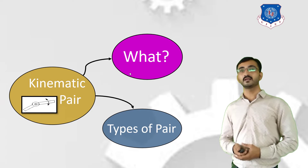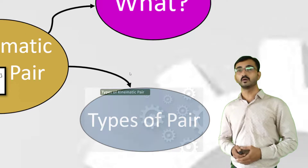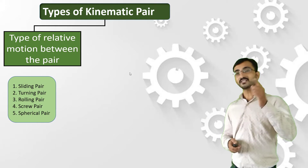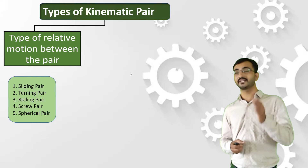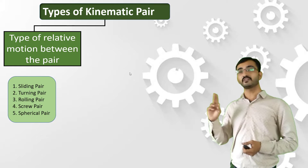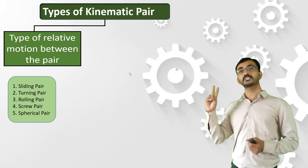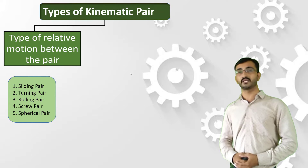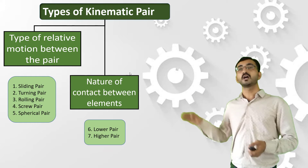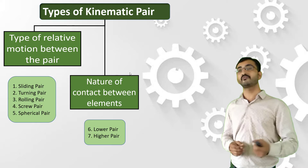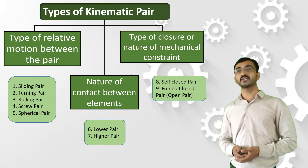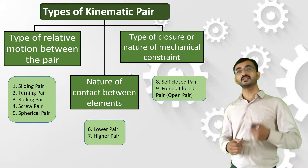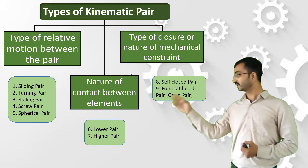Now after learning about Kinematic Pair, let's learn the types of Kinematic Pairs. Kinematic Pairs are classified according to mainly three categories. The first type is classified according to the relative motion between two links — how these two links are moving will define the first classification. The second classification is according to the contact between them, how they are connected. The third classification is according to the type of closure, or how they are mechanically connected by other means. In this way, we can classify Kinematic Pairs into nine types.